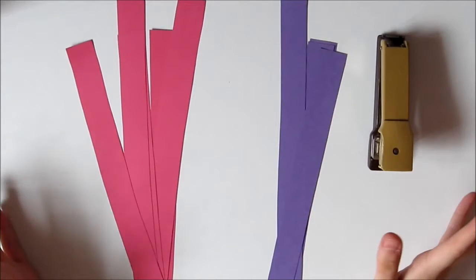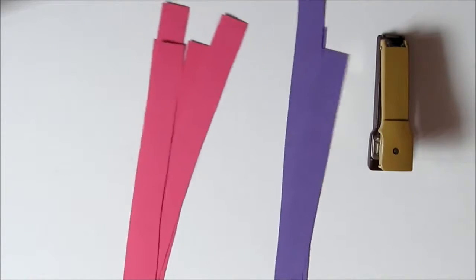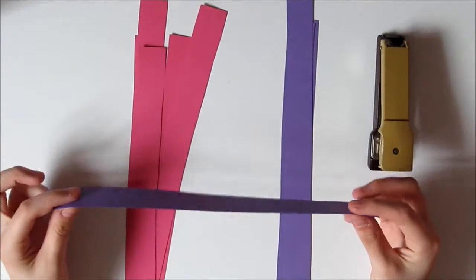Hi, today we're going to be making a heart paper chain. I'm using two different colors to make it look really pretty. The first thing you need to do is cut your card or paper into one-inch wide strips.